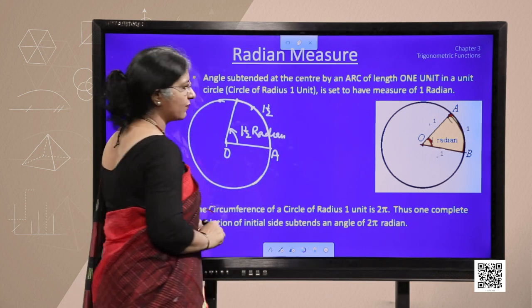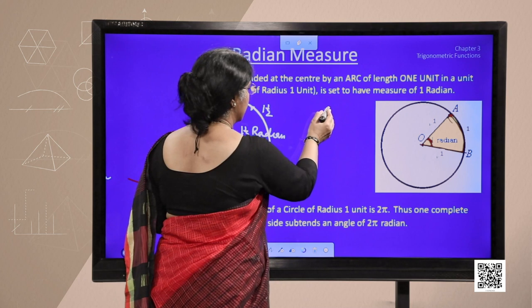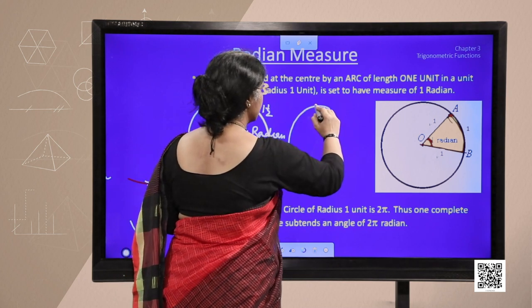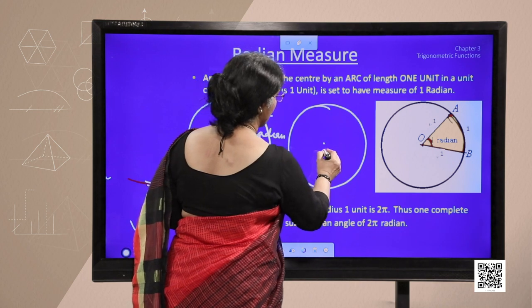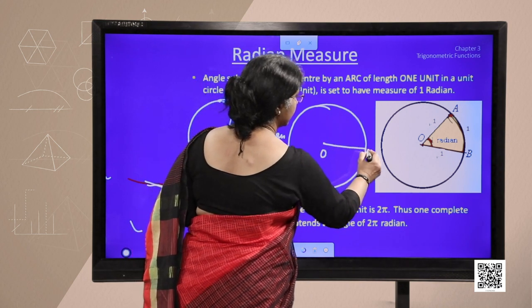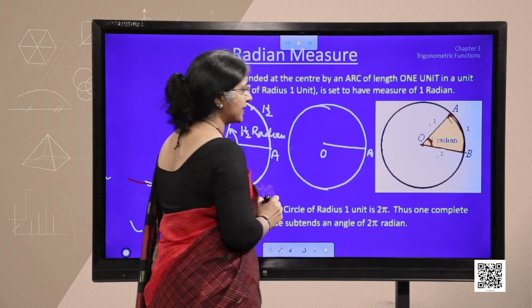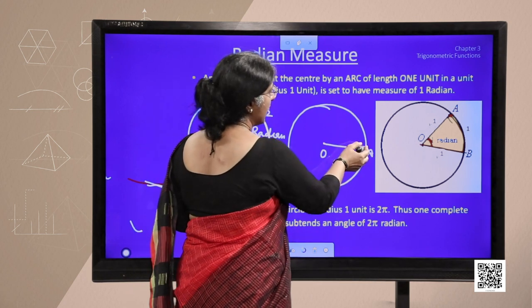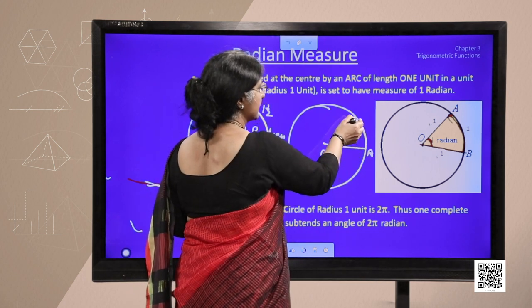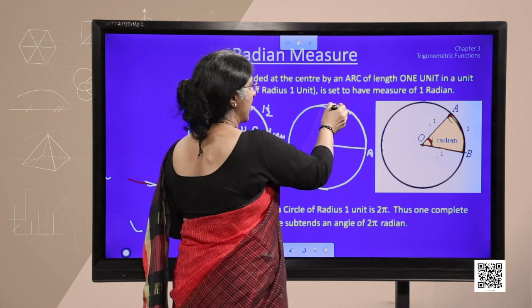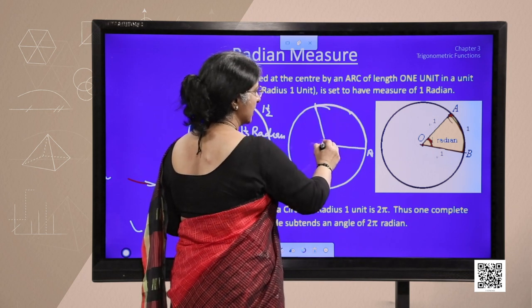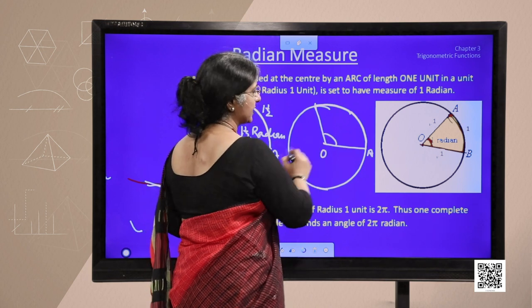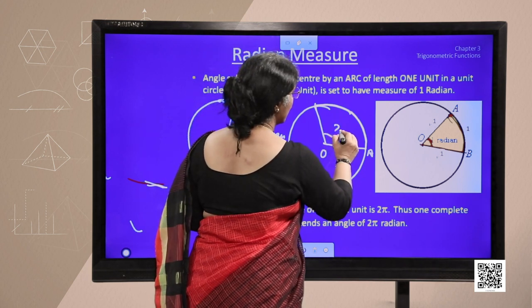Let us take one more example, consider another circle. Centre O and this radius of 1 unit and if arc traces the distance exactly 2 times of radius, then this angle traced is said to be 2 radians.